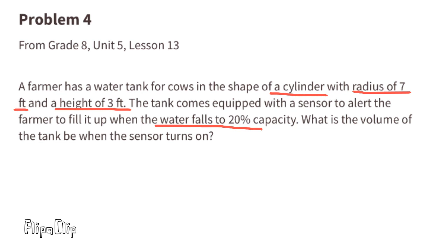What is the volume of the tank when the sensor turns on? Since the radius is 7 and the height is 3, we can substitute the r with a 7 and the h with a 3. 7 times 7 times 3 times pi equals 461.58 feet cubed.